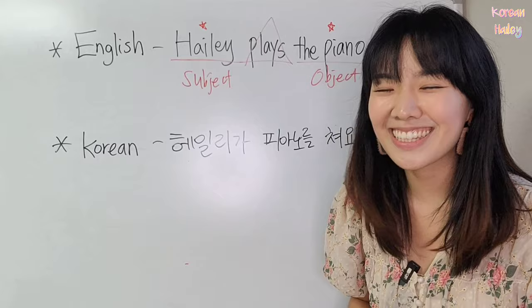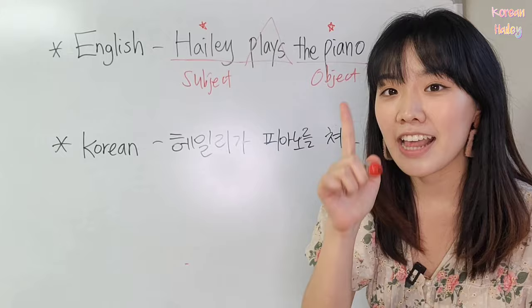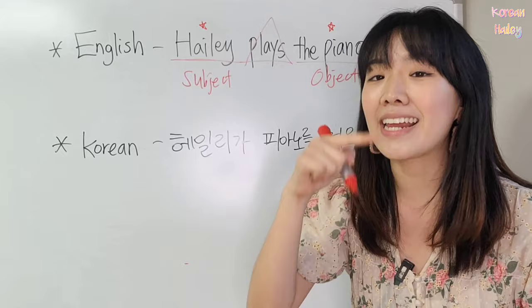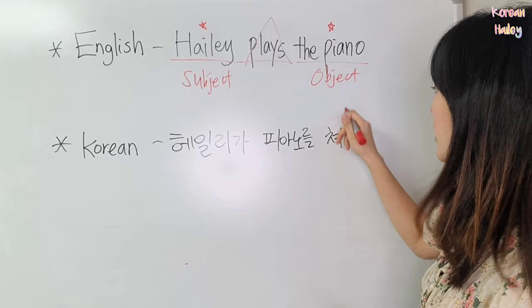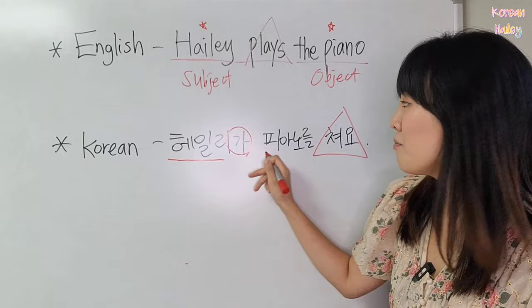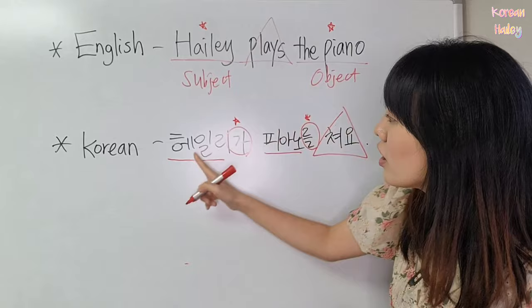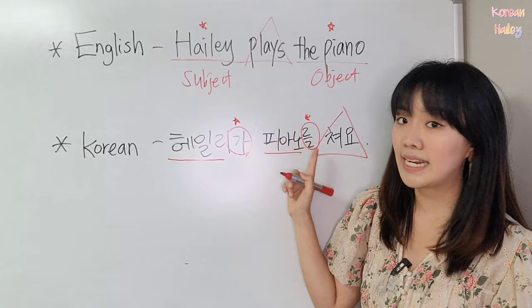Let's look at the Korean sentence. 'Ailey plays the piano' in Korean — this is the Korean sentence. First of all, you have to know Korean uses the verb at the end. In English it comes in the middle, but in Korean we use the verb last. So 쳐요 is 'play.' And then: 에일리가, 피아노를 — we put something after the subject and object. They are called subject marker and object marker.